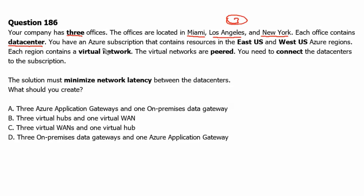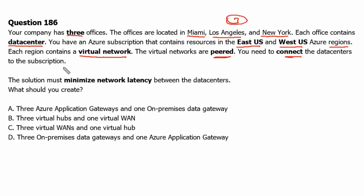You have an Azure subscription that contains resources in the East US and West US Azure regions. Each region contains a virtual network. The virtual networks are peered. You need to connect the data centers to the subscription.